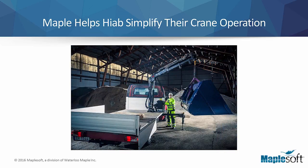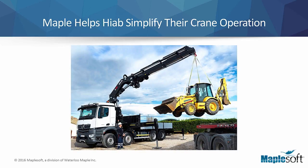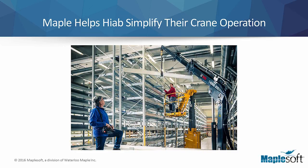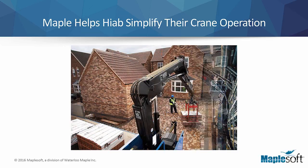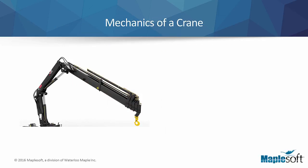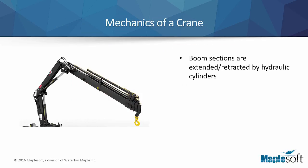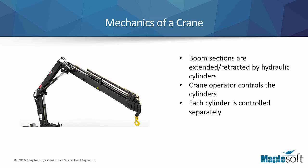Using their existing simulation platform to model crane behavior, HIAB selected Maple as the advanced computation tool to ensure their calculations were accurate and to help their simulations execute more rapidly. On a crane, the boom sections are extended and retracted by hydraulic cylinders which apply force to the crane elements that control joint motions. The crane operator controls the action in which hydraulic fluid is transmitted under high pressure into the cylinder. Each cylinder is controlled separately in order to move the tip of the crane to its desired location.